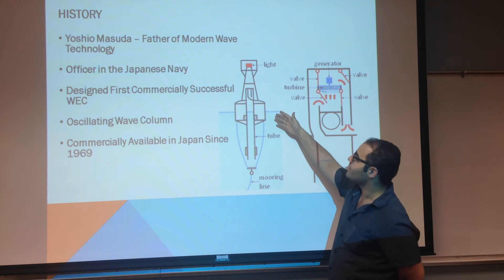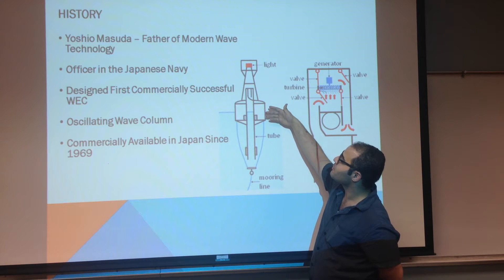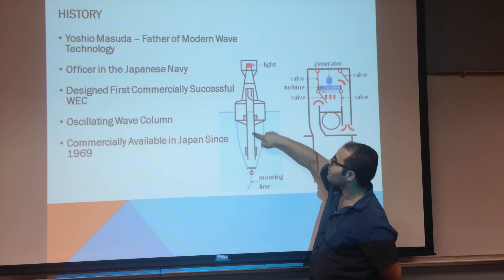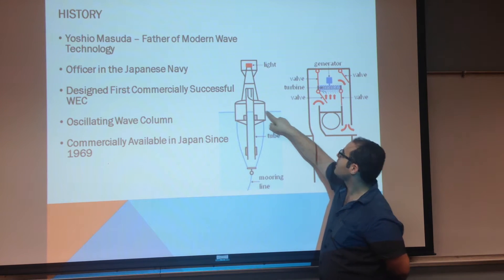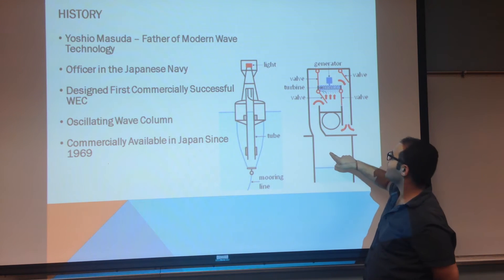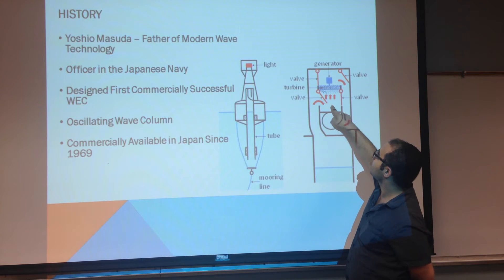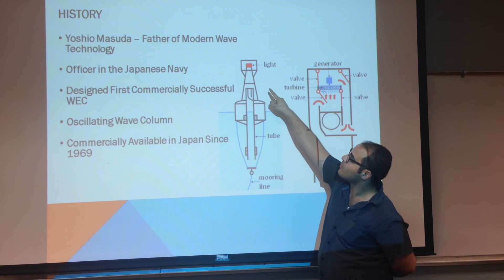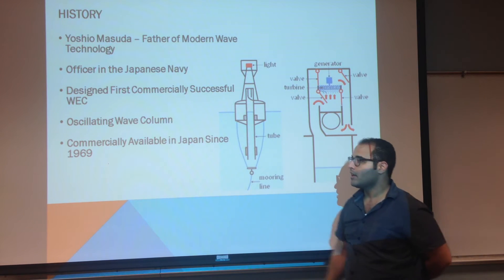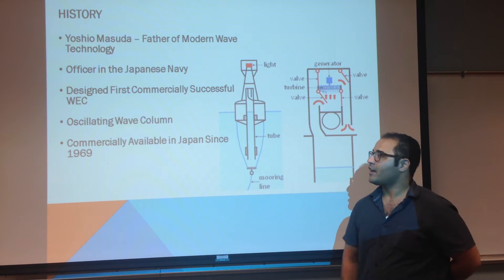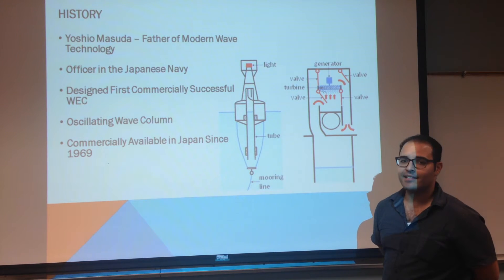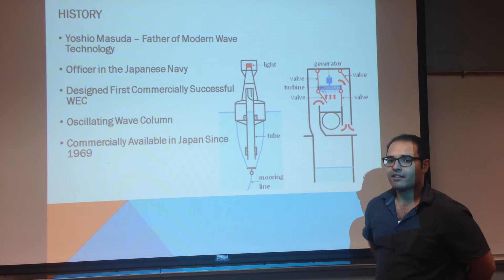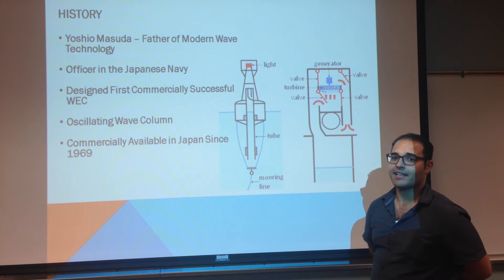The way it works is: as the buoy moves up and down, water swells within the chamber, increasing the air pressure, which is then blown through a turbine, turning a generator, which is used to power a light. It was commercially available in Japan since 1969, and shortly after in the United States.